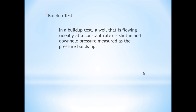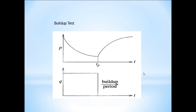The next test is the buildup test. In a buildup test, a well that is initially flowing at a constant rate is shut in, and the downhole pressure is measured as it builds up. The input is an alteration in the production rate — specifically, dropping the production rate to zero — and the pressure response is the pressure buildup. On the pressure versus elapsed time diagram, the first portion of the curve represents the flowing period where pressure is declining, and at the shut-in moment we drop the rate to zero, creating a disturbance.